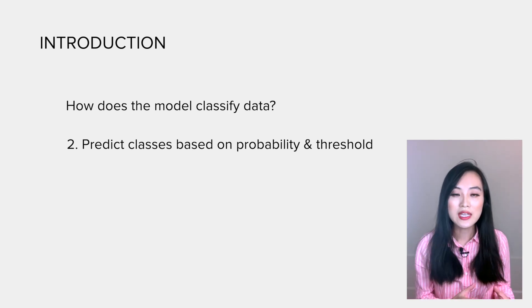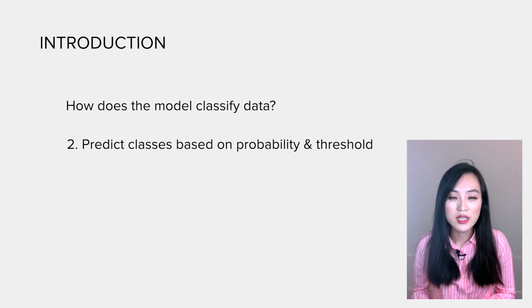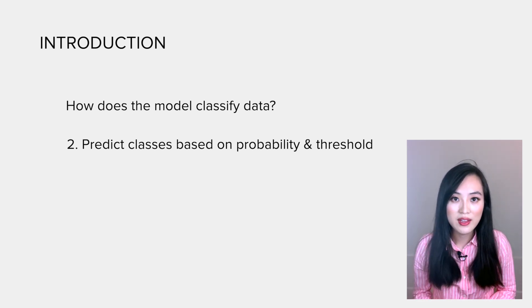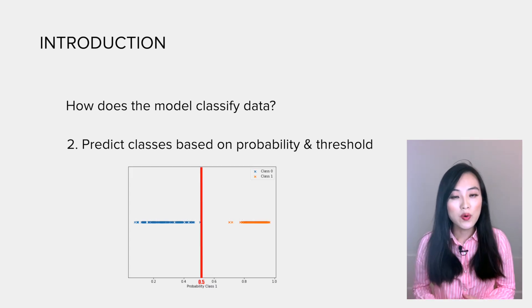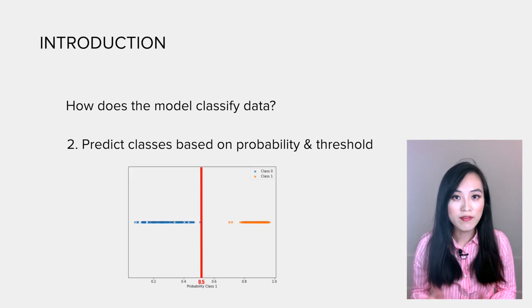If the probability is larger than the threshold, the prediction will be class 1. Otherwise, it's class 0. For example, if we set the threshold as 0.5, then if the probability is over 0.5, the prediction is class 1.